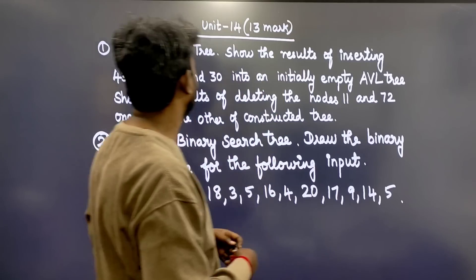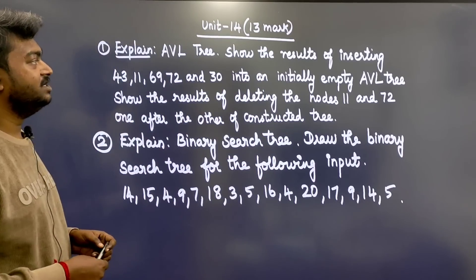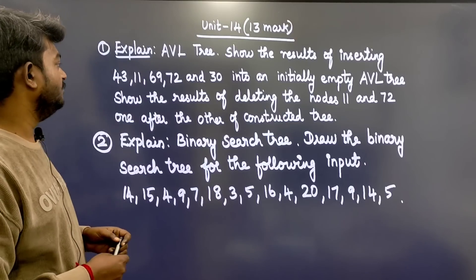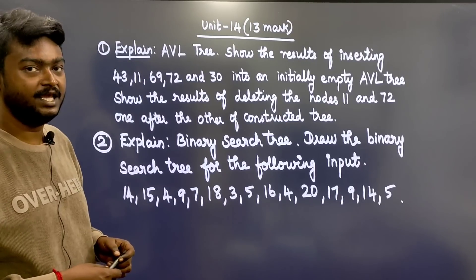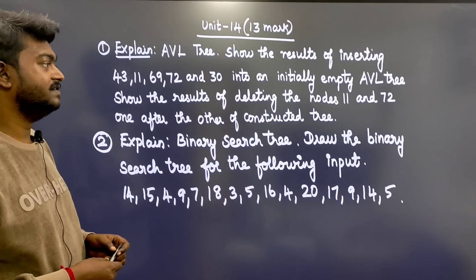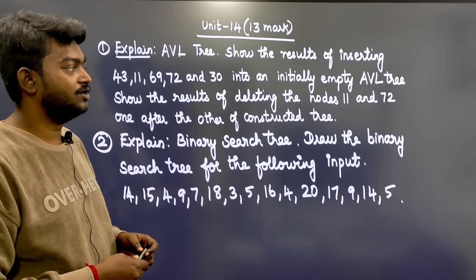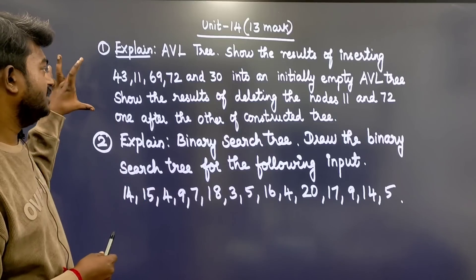Unit 4: Explain AVL tree. Show the results of inserting 43, 11, 69, 72, and 30 into an initially empty AVL tree. Show the results of deleting nodes 11 and 72 one after the other from the constructed tree.